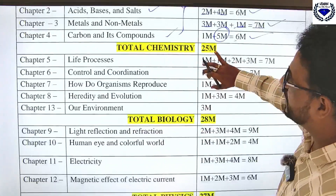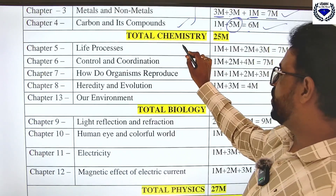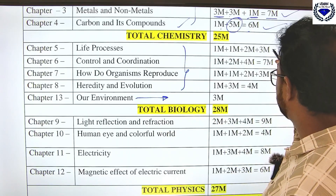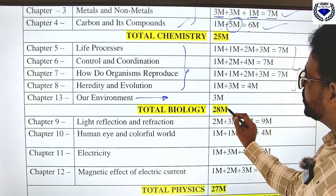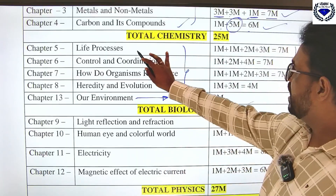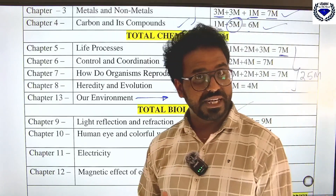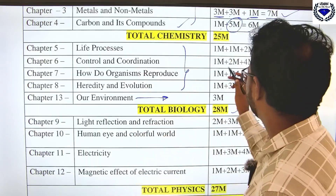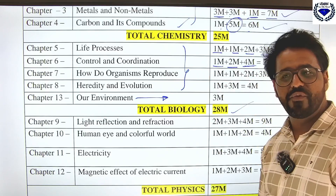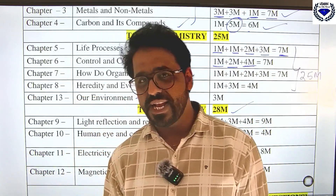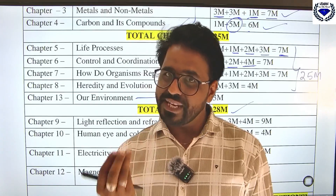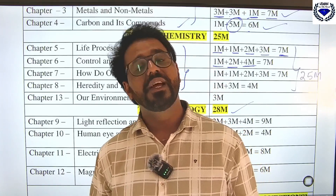Coming to biology: four chapters totaling 25 marks plus 3 marks from Our Environment = 28 marks. From Life Processes, expect 7 marks — including the diagram of nephron or heart, two one-mark questions, one two-mark question, and one three-mark question. From Control and Coordination: one one-mark, one two-mark, and one four-mark question. For the four-mark question, remember hormones and glands, plant hormones, and animal control and coordination in both plants and animals. You may be asked to draw the brain diagram.